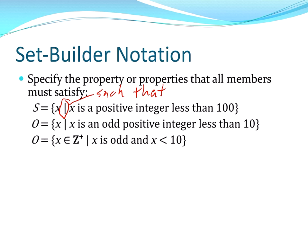And here, another way to say it, O is X, which is an element of Z plus such that X is odd and X is less than 10. Different ways of saying the same thing in those last two.